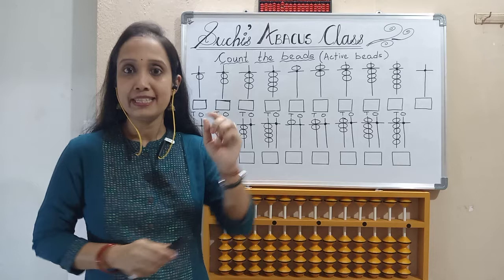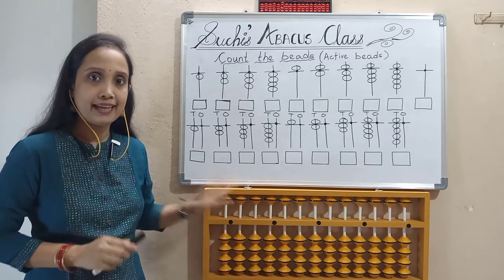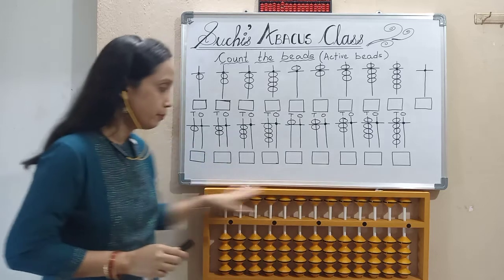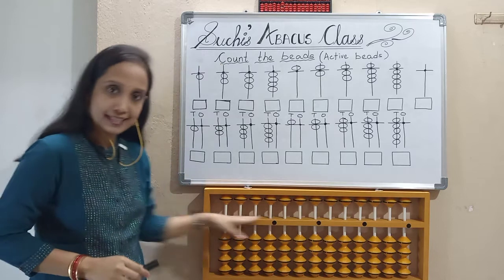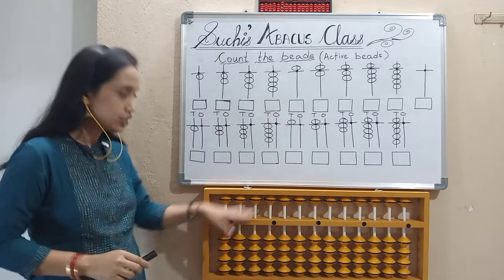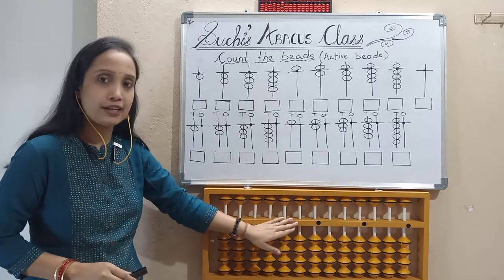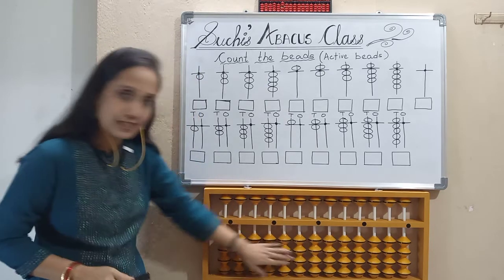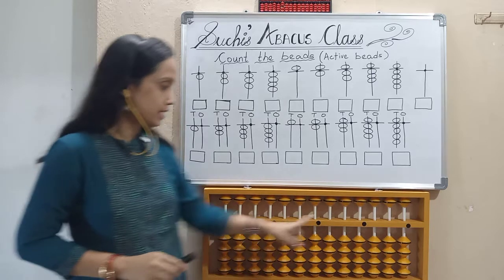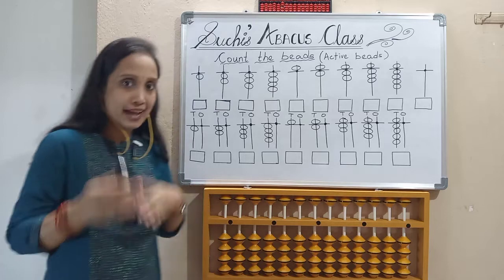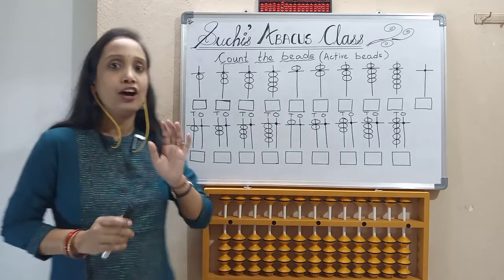Now let's have a quick revision. Last class I told you about the parts of the abacus: the outer side is called the frame, and the most important line is the horizontal bar. Up to the horizontal bar, the upper beads are there, and below the horizontal bar, lower beads are there. On the horizontal bar, some dots are there, and the small lines are called rods.